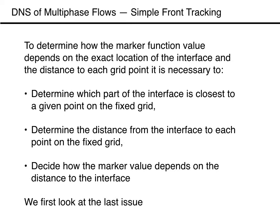To determine how the marker function value depends on the exact location of the interface and the distance to each grid point, we need to determine which part of the interface is closest to a given point on the fixed grid, find the distance from the interface to each point on the fixed grid, and decide how the marker value depends on the distance to the interface. We first look at the last issue.